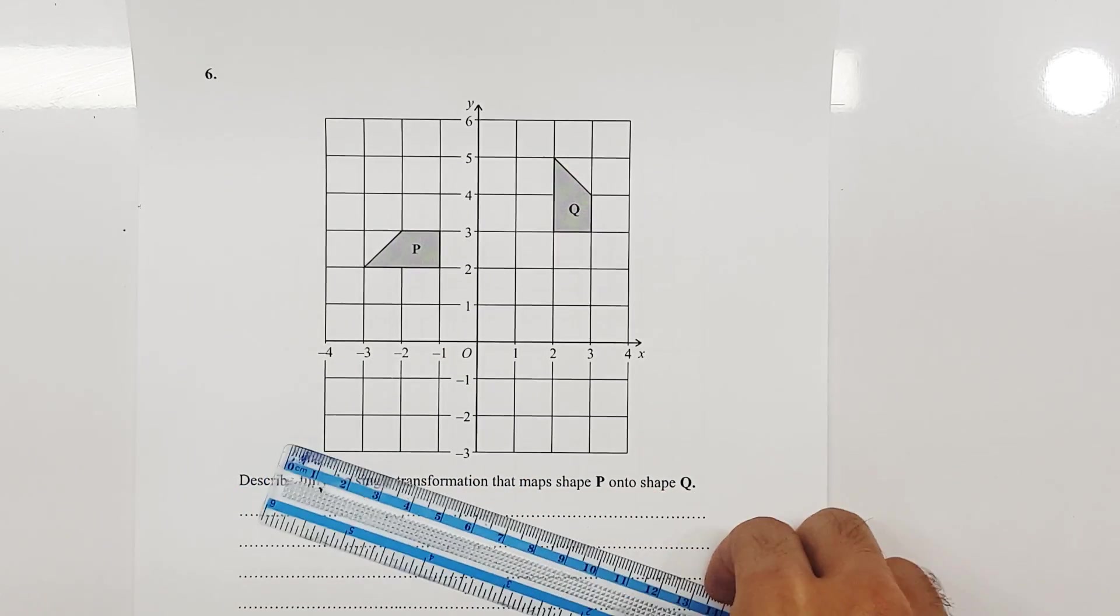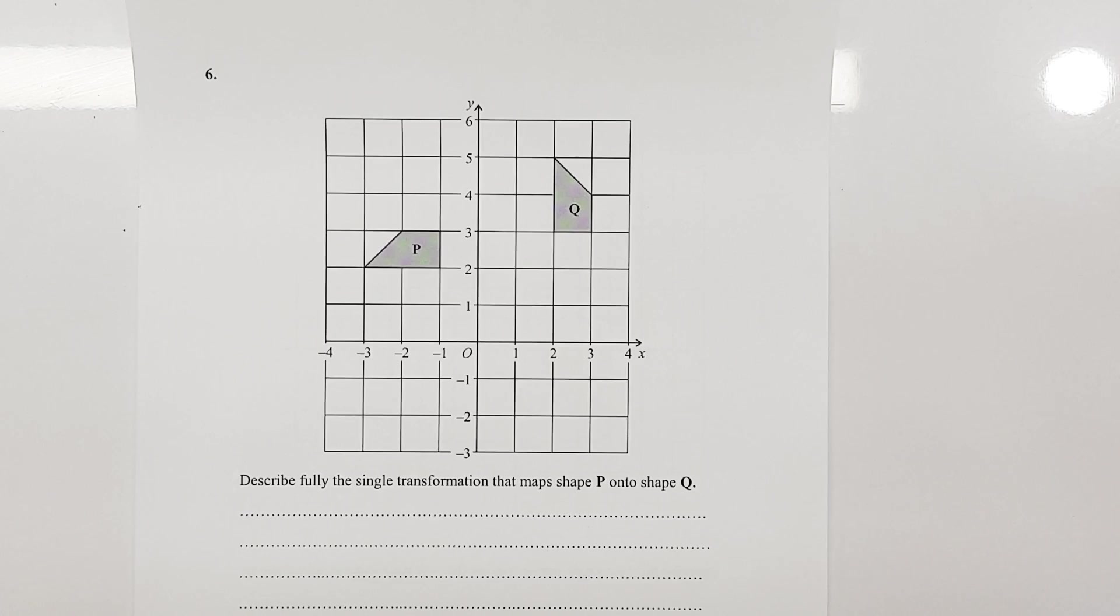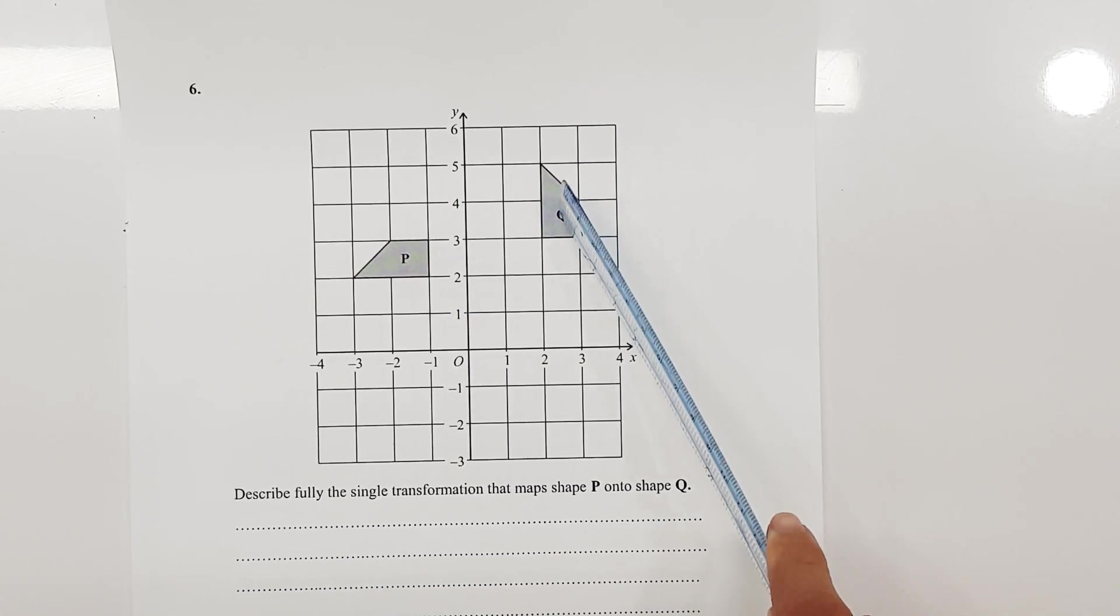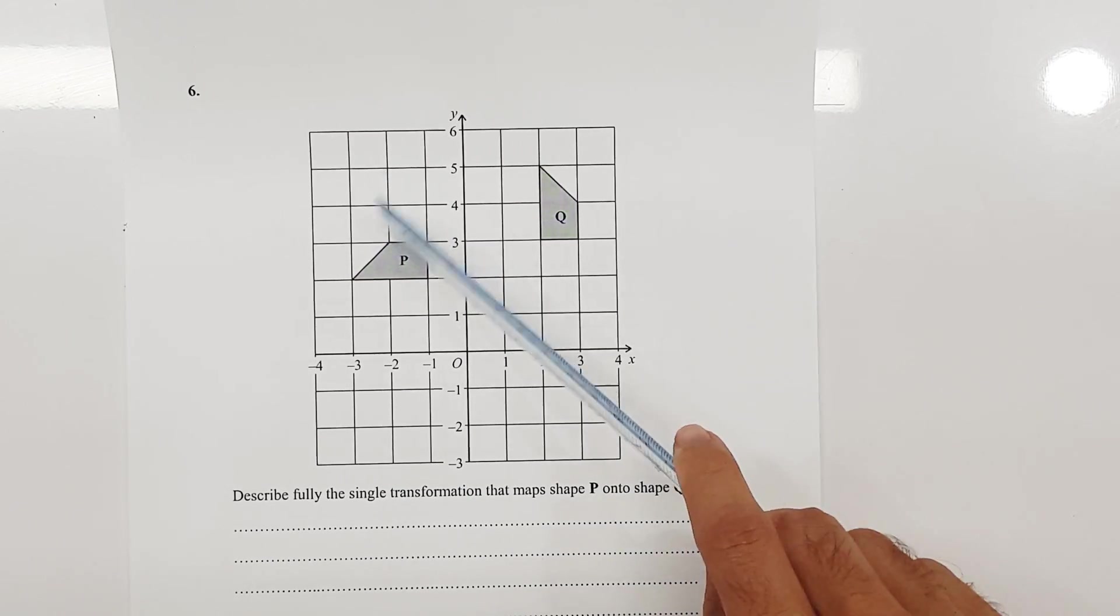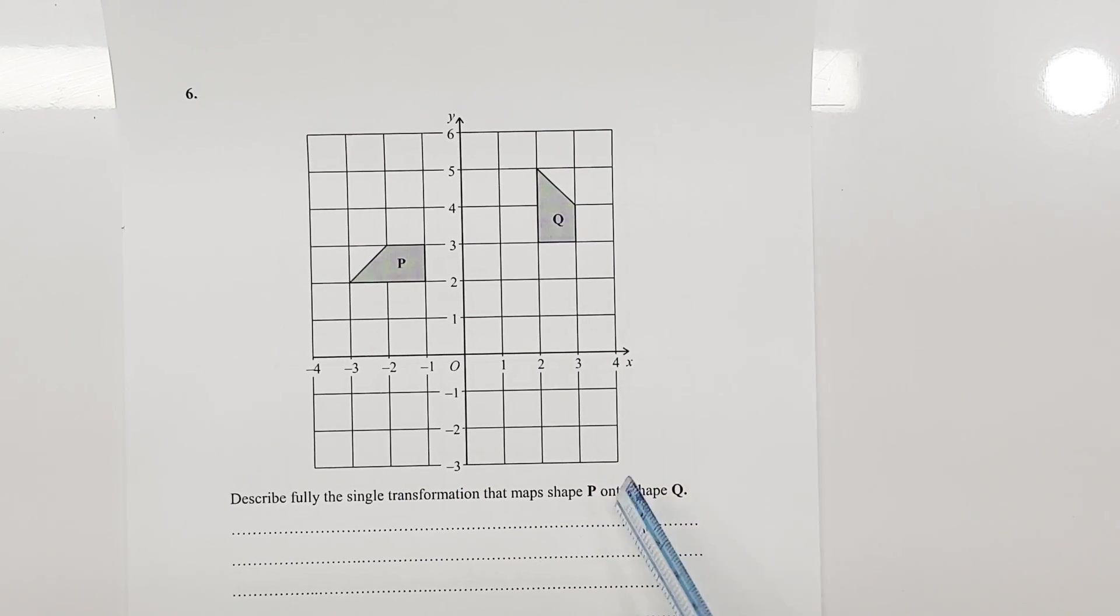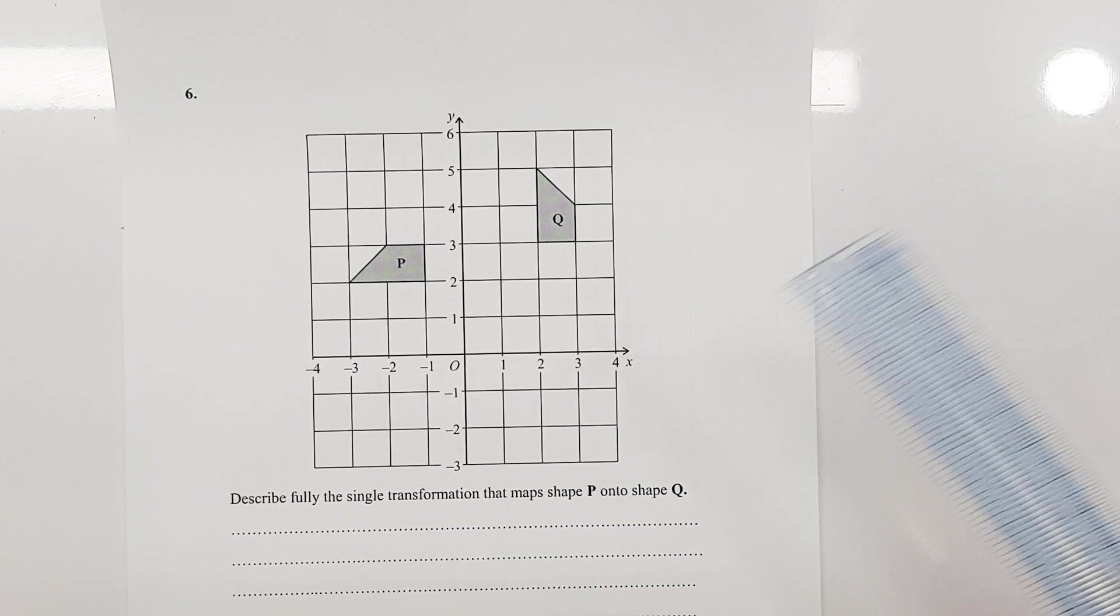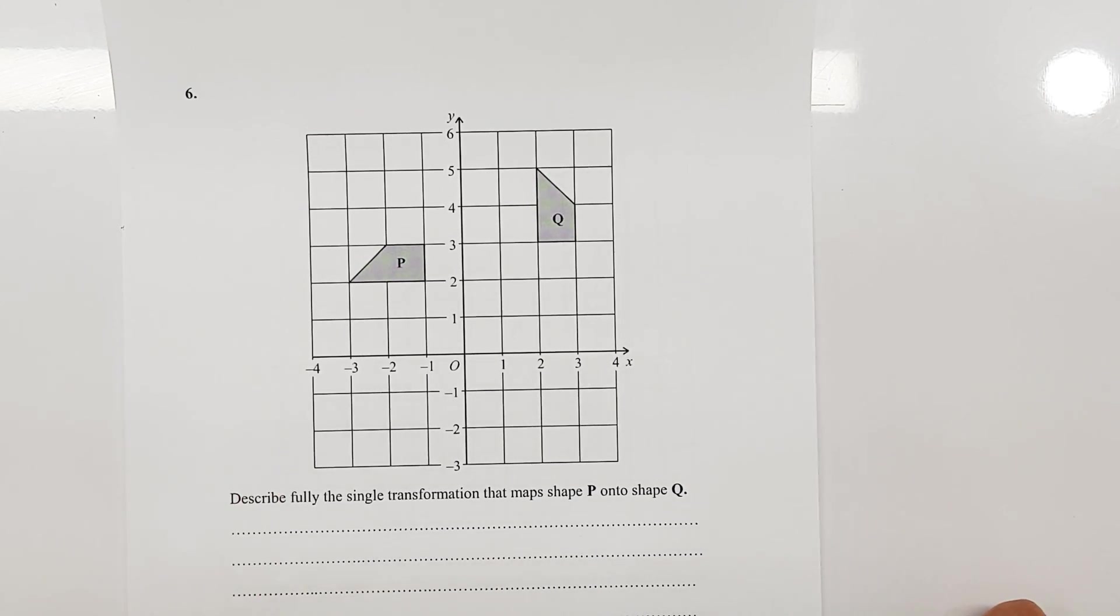Alright so I have a question here with me and in this question we have to describe fully the single transformation that maps P onto the shape Q. Now P is our object and Q is our image. Whatever comes after the term onto is our image. Now a question like this is going to be of two marks easily.